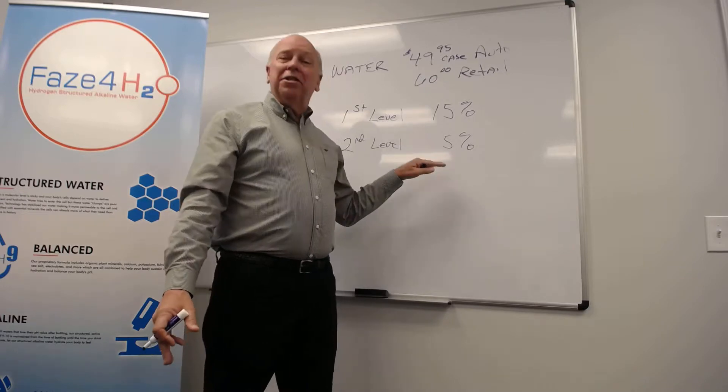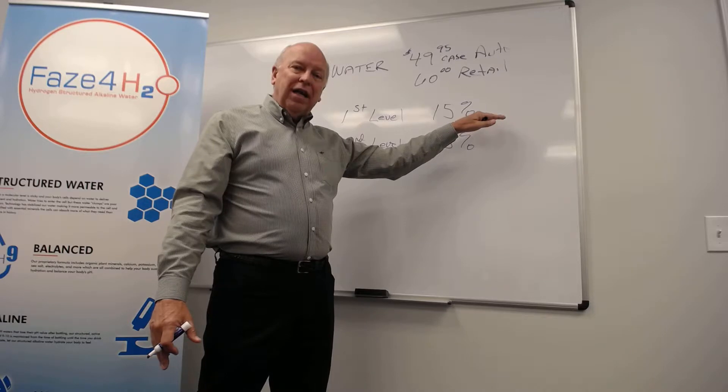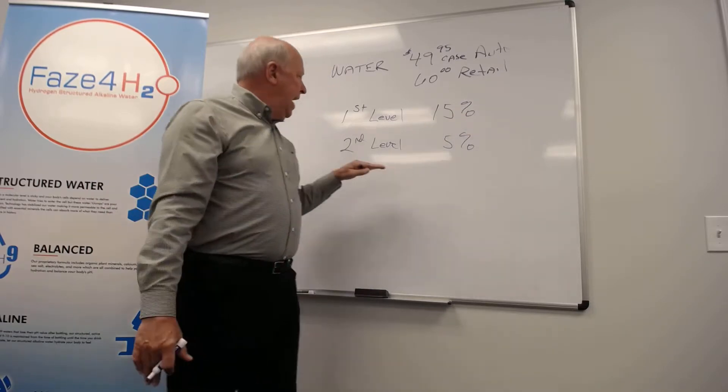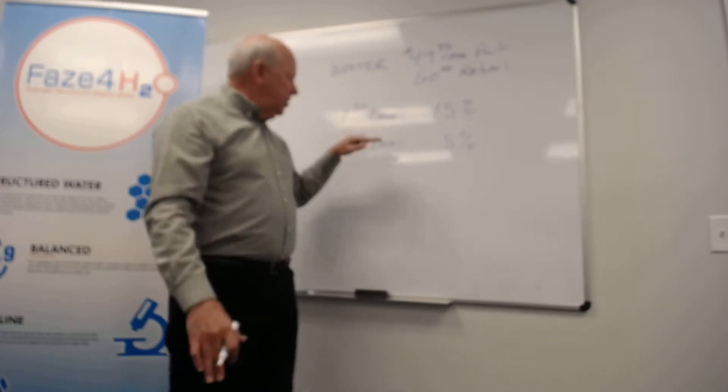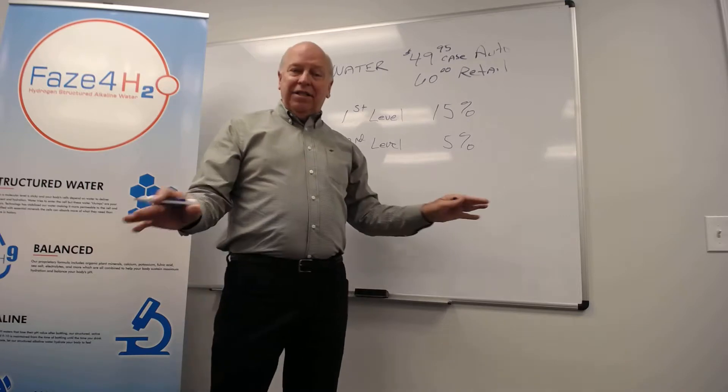Well, ladies and gentlemen, this is pretty simple. We're going to pay out two levels. We're going to pay 15% on the first level. That's of everybody you sign up as a customer or an associate. And every associate you have that signs somebody up, we're going to pay 5%. That's your second level. That's it.